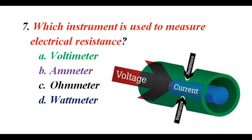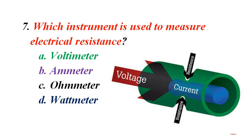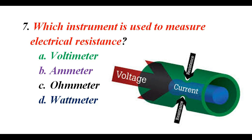Which instrument is used to measure electrical resistance? A. Voltmeter. B. Ammeter. C. Ohmmeter. D. Wattmeter. The correct answer is C. Ohmmeter.